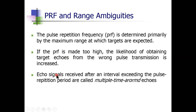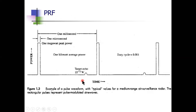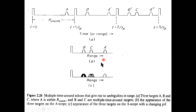Multiple time around echoes are echo signals received after an interval exceeding the pulse repetition period TP. If an echo is received after the second TP it is called a second time around echo; if received after the third, fourth, or fifth TP it is called a multiple time around echo, which is undesirable. These multiple time around echoes give rise to range ambiguities.